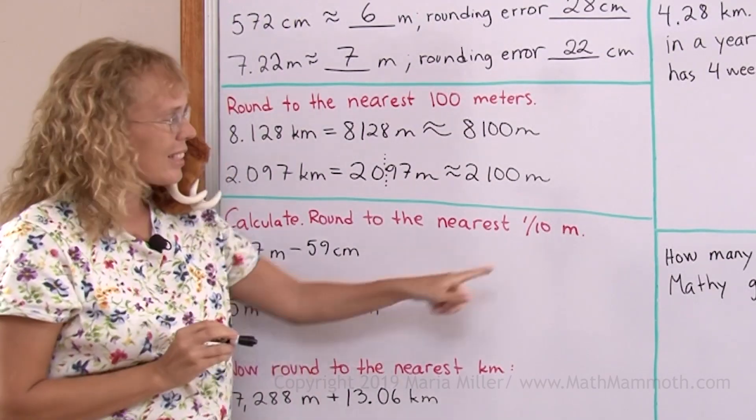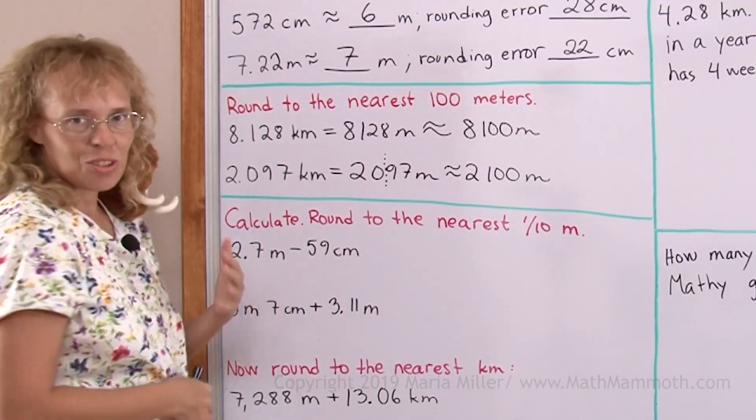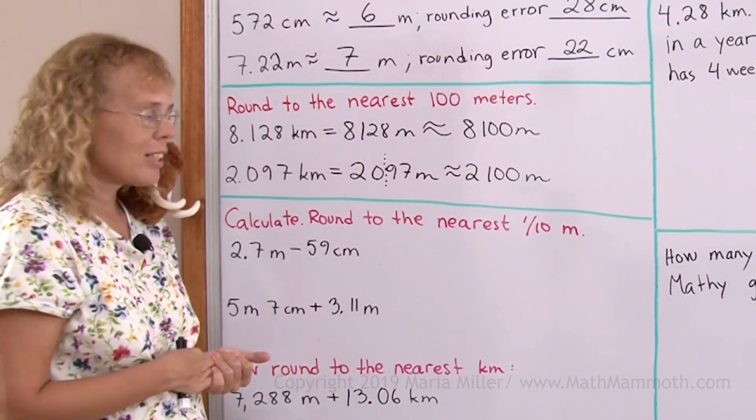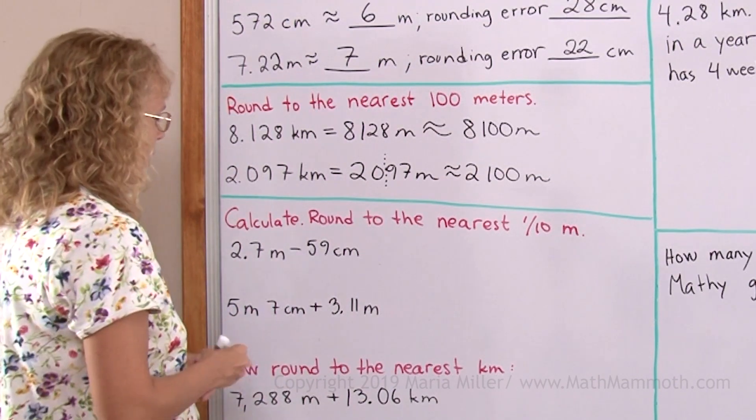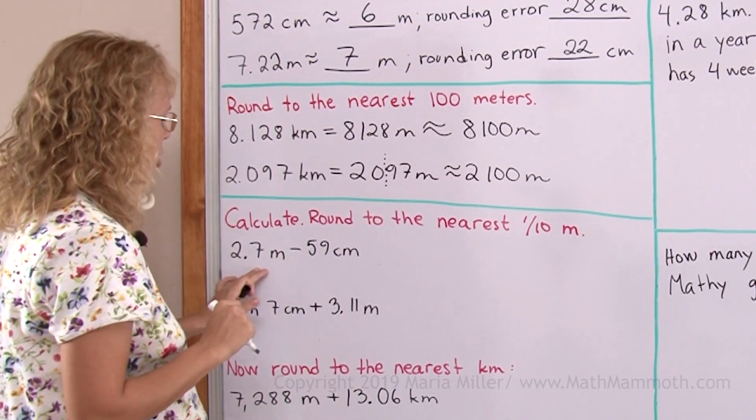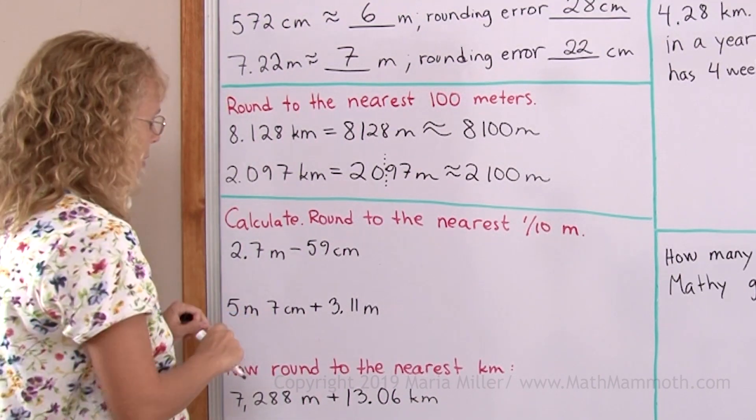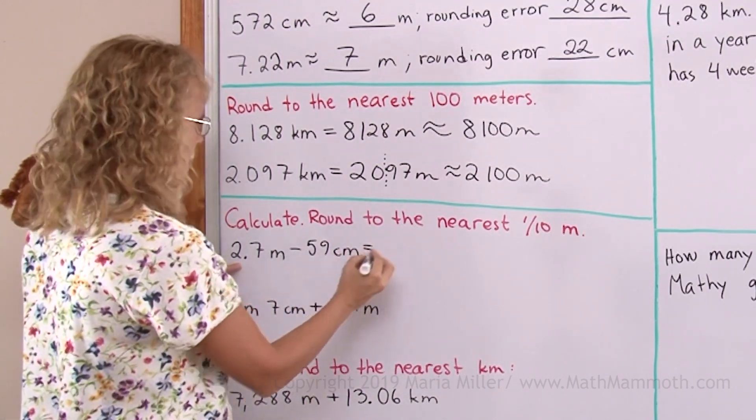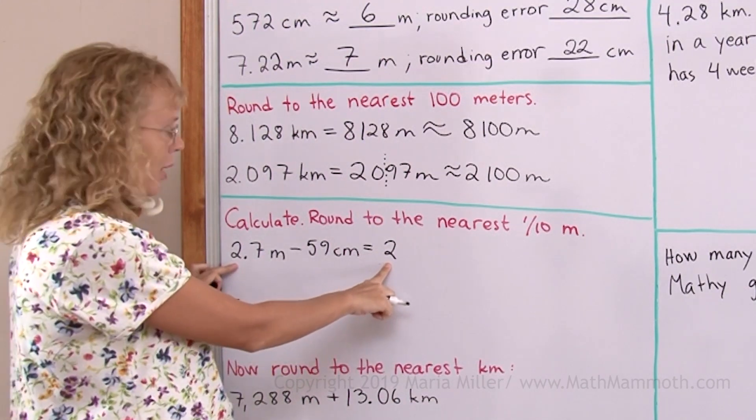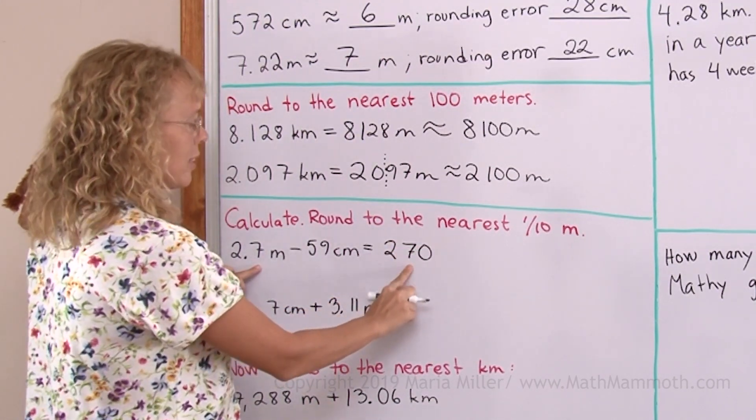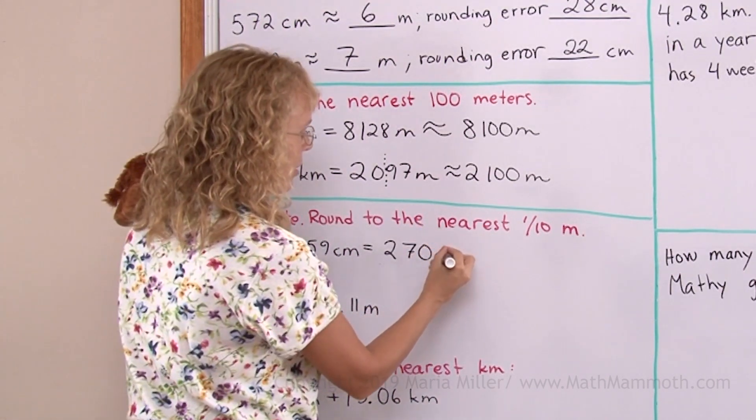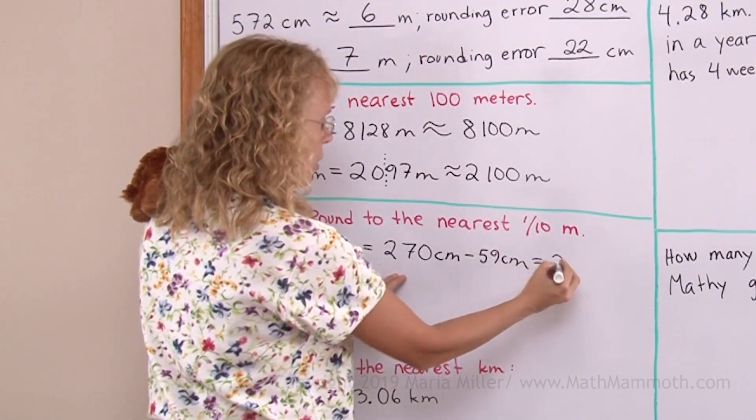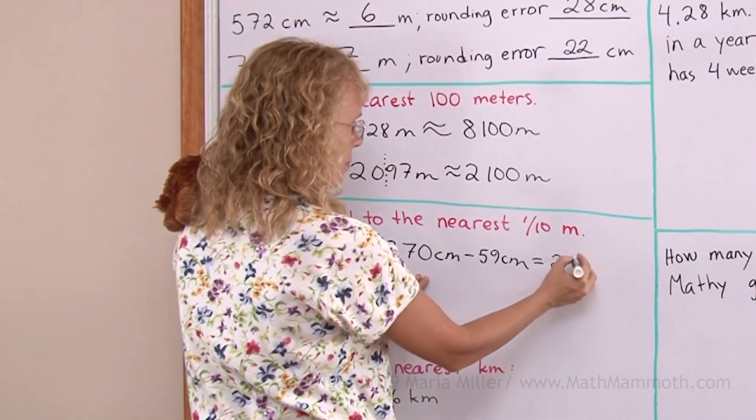Calculate and round to the nearest tenth of a meter. Again, just to give us more practice. This is in meters, this is in centimeters. We can either change both to centimeters or change both to meters. Either way will work. For example, let's say that I will change both to centimeters so I won't have decimals to deal with. 2 meters makes exactly 200 centimeters. So this 2 here goes to hundreds place, and so the seven has to come after that. So this is 270 centimeters take away 59 centimeters. So we will get 211 centimeters.